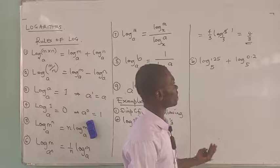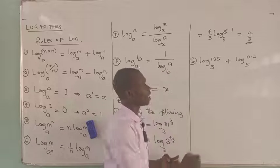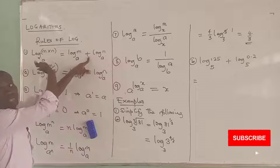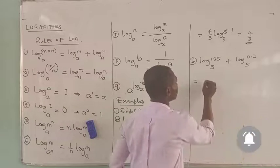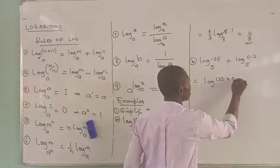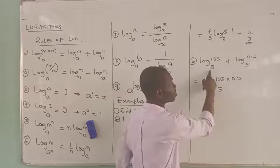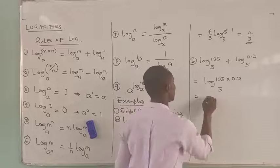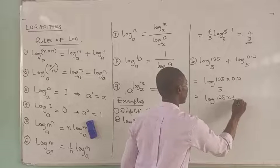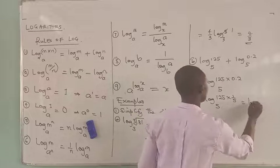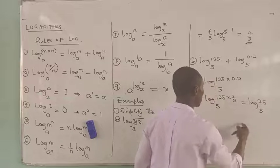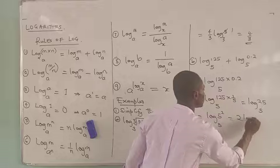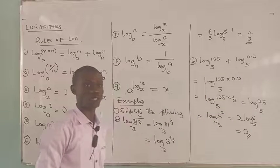The second example says: log 125 base 5 plus log 0.2 base 5 — simplify. By the addition rule, addition changes to multiplication, so I bring the logs together: log of 125 multiplied by 0.2, base 5. Now 0.2 is 1 over 5, giving log of 125 times 1 over 5, base 5. 5 divides into 125 to give 25 base 5. 25 is 5 squared, so log 5 squared base 5. The 2 comes to the back: 2 log 5 base 5, which equals 2.